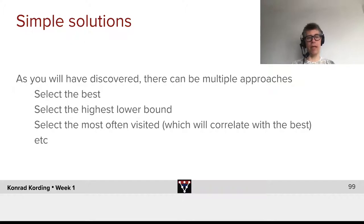Another one which is very conservative is we could choose the move that has the highest lower bound. That would be a move with relatively good Q and relatively small error bars. Alternatively, we can say we want to select the most visited one, which will correlate with the best. There are many other solutions in this space.